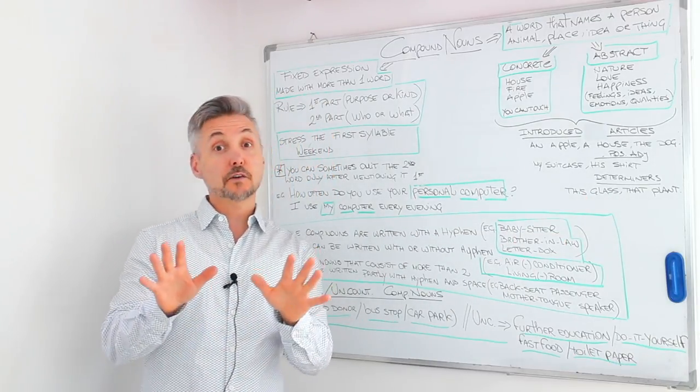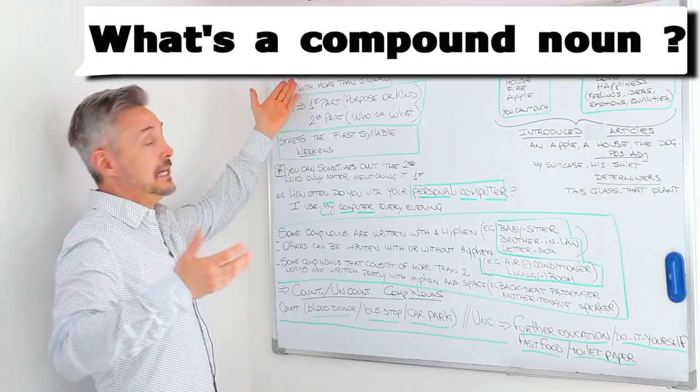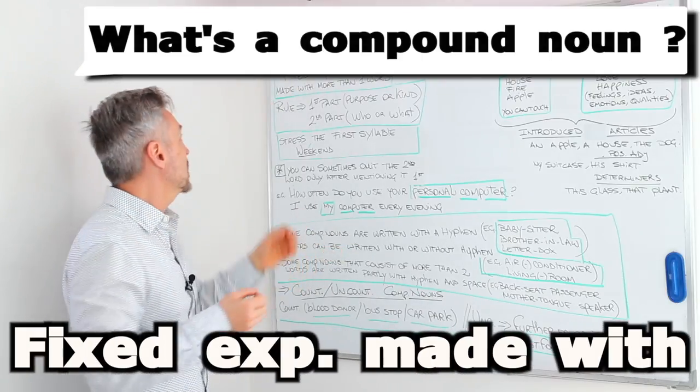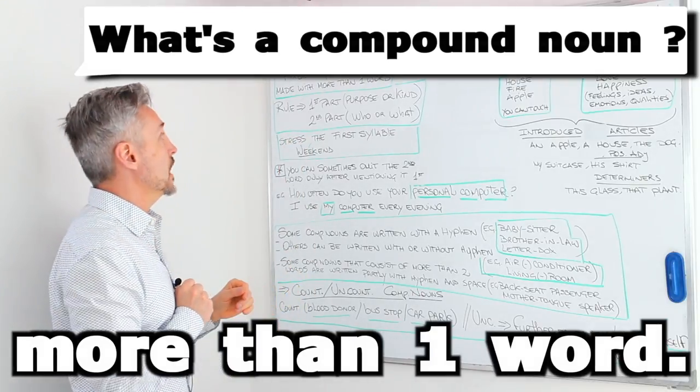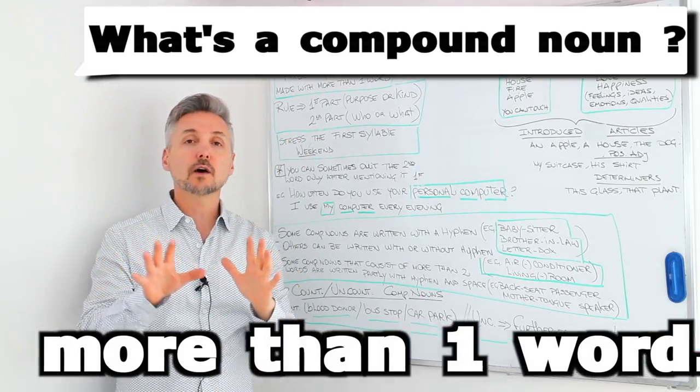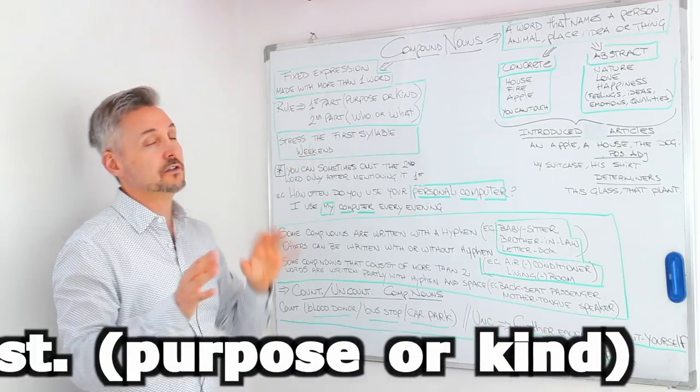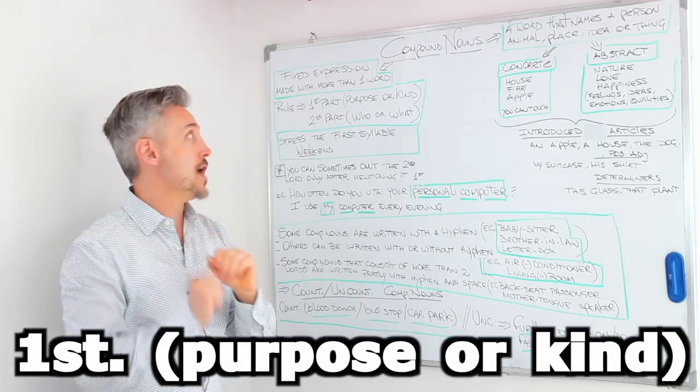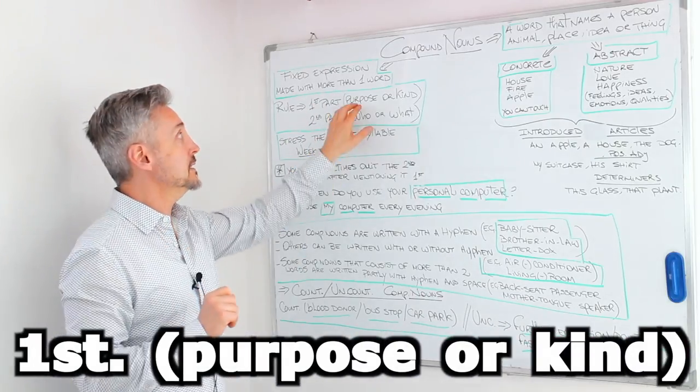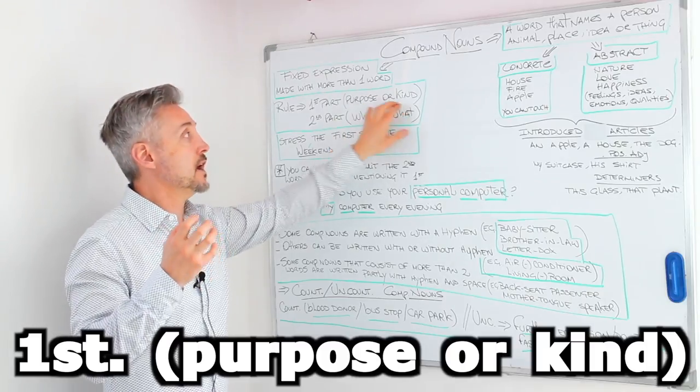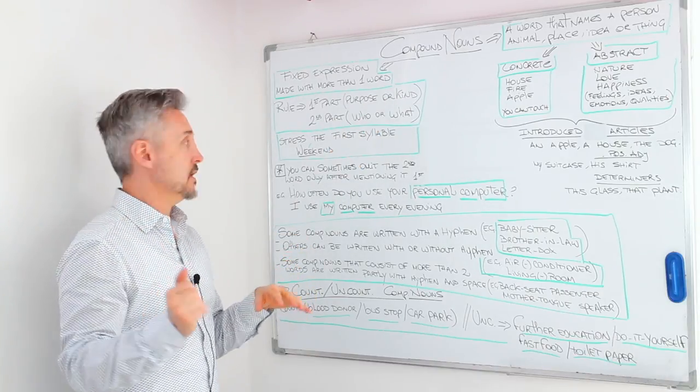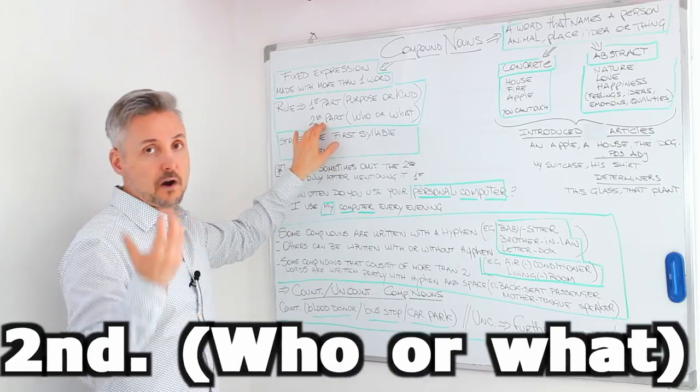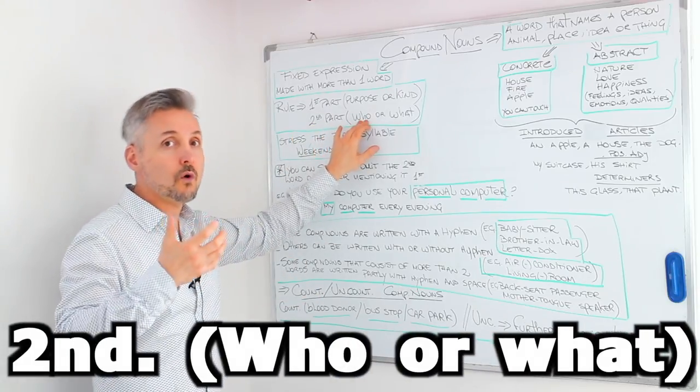I said that we're going to talk about compound nouns. It's a fixed expression made with more than one word. The first rule to follow is that the first part of the compound noun usually is a purpose or kind. I will give you some examples later on.